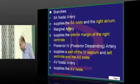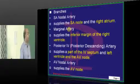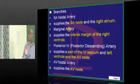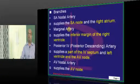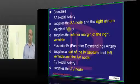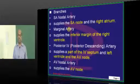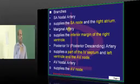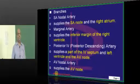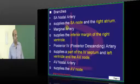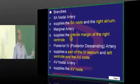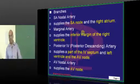What are the branches of the right coronary artery? The SA nodal artery is a branch of the right coronary artery — this is one of the favorite questions of examiners. If the right coronary artery occludes, then our pacemaker gets affected and the heart loses its rhythm. So the SA nodal artery supplies the SA node and also the right atrium.